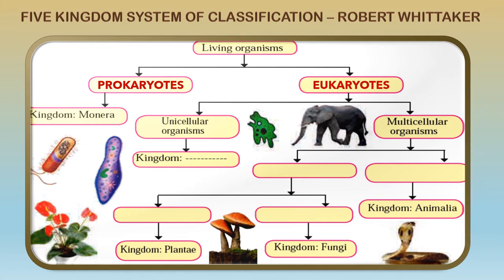Prokaryotes belong to the kingdom Monera, the first kingdom. Eukaryotes are further divided into multicellular organisms like the elephant you see here, or unicellular organisms like amoeba. These unicellular organisms having eukaryotic cells belong to the kingdom Protista.